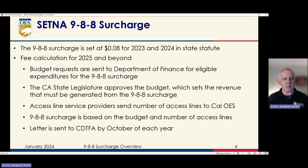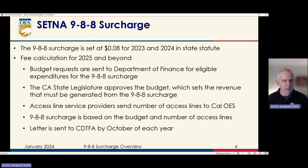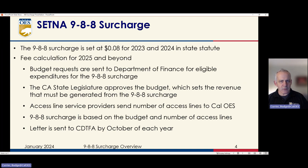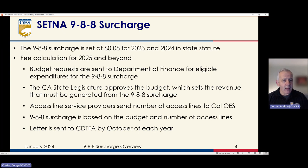The first step in that process is the budgets from all the agencies that are receiving revenue through the 988 surcharge process. They send in their budget requests to the Department of Finance, focused on submitting budget requests that align with eligible expenditures for the surcharge. Once that budget is all put together, the California legislature votes on the budget. It goes to the governor and the governor signs it. That sets the authorized amount that each agency can use from the 988 surcharge. Once that happens in the late June, early July time period, we then start to receive the number of access lines from each of the carriers.